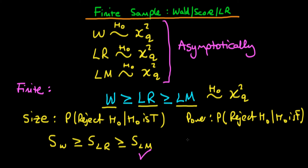If we compare them in terms of power, we find exactly the same relationship: the power of the Wald statistic is greater than or equal to the power of the LR statistic, which is in turn greater than or equal to the power of the LM statistic. The reason is that since the Wald statistic is greater in value, we reject H0 more often, which is why its power is largest. So in terms of power, we would prefer to use the Wald statistic. The difference in power is actually due to the difference in size, and it is possible to correct these test statistics so they have exactly the same size — in which case the powers are very much comparable.